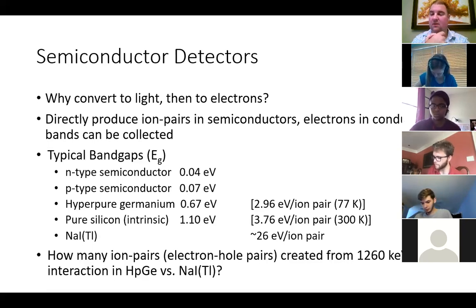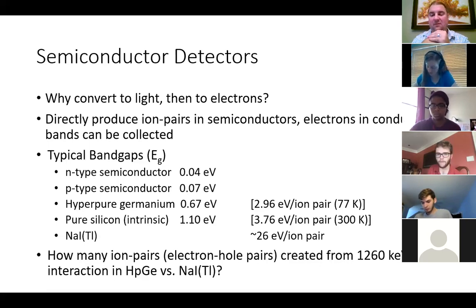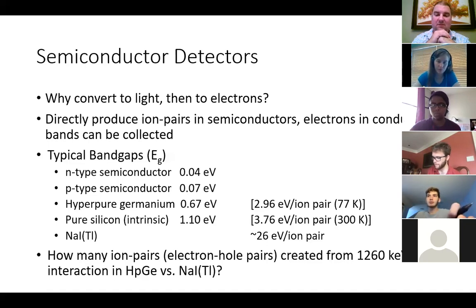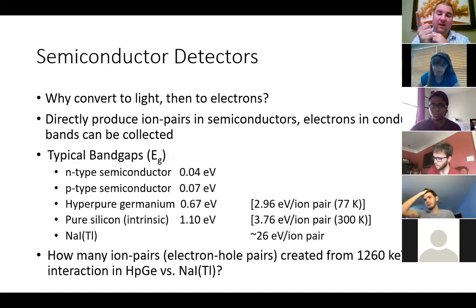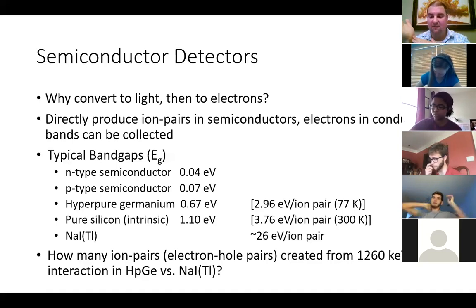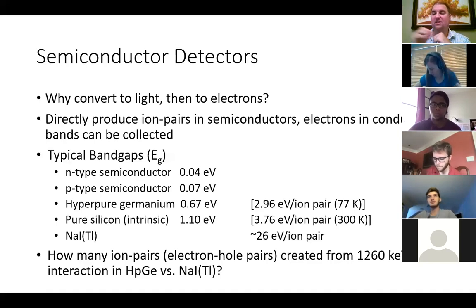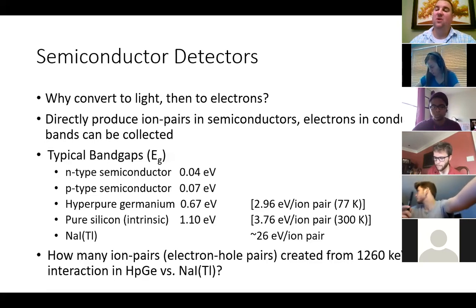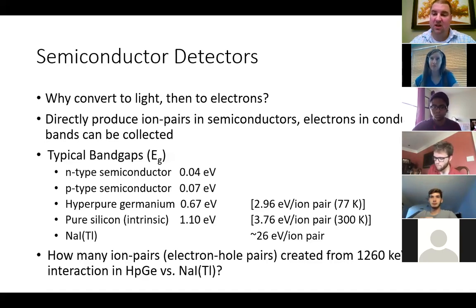Even photons that do eject electrons from the PMT photocathode introduce uncertainty in the number of electrons ejected, and each multiplication dynode stage in the PMT adds further uncertainty. In the end, NaI:Tl accumulates much larger total uncertainty than germanium, which is why it has significantly poorer energy resolution. Spectra from both detector types can be shown to illustrate this difference visually.